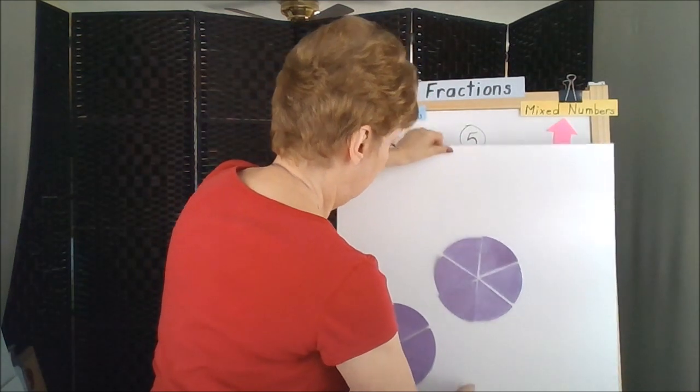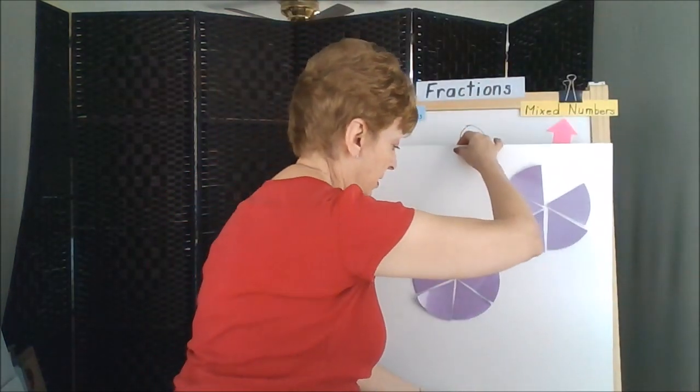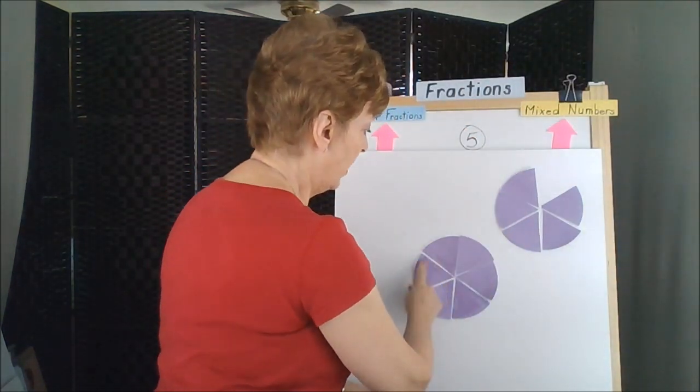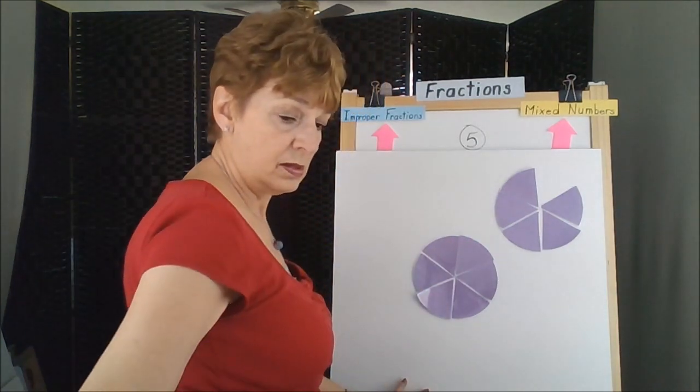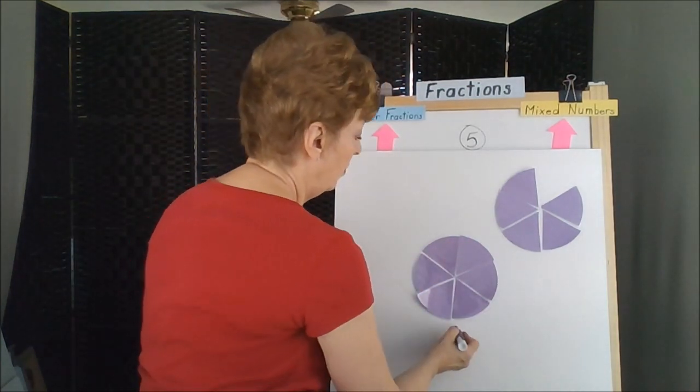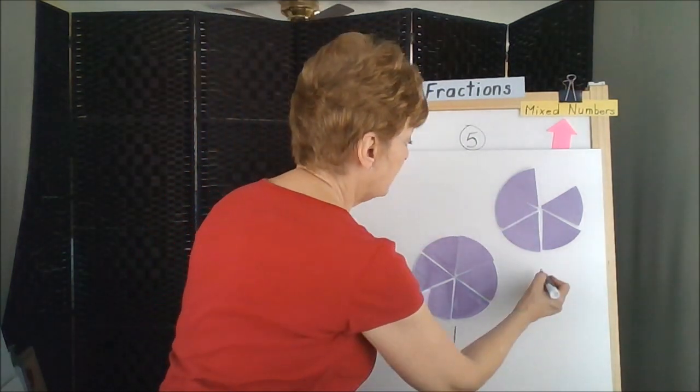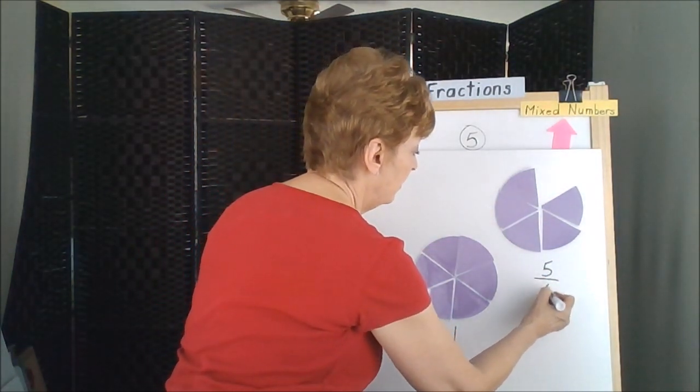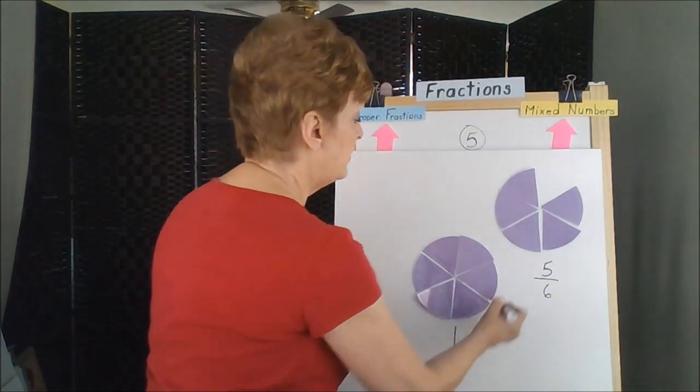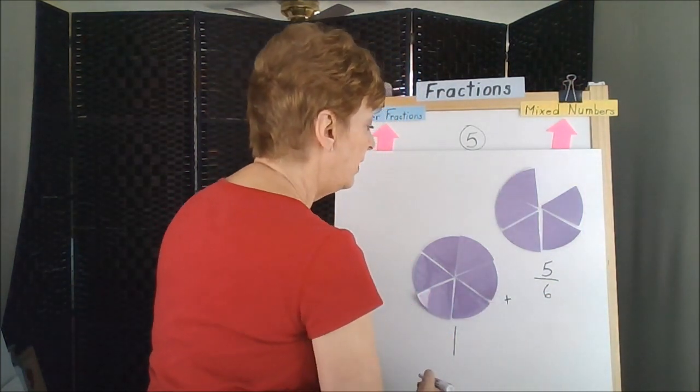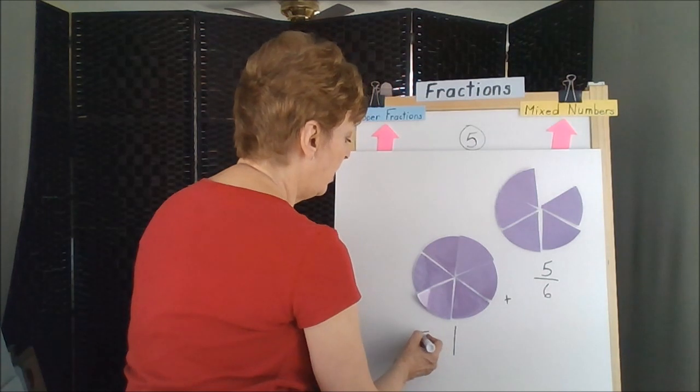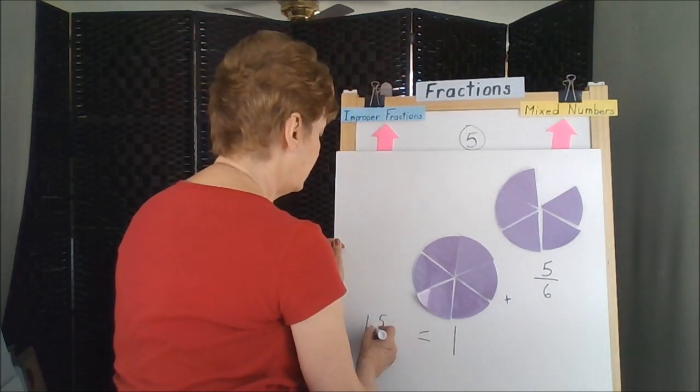One. We have one whole. One whole and one, two, three, four, five sixths of another, which gives us if we added those together that would make our mixed number of one and five sixths.